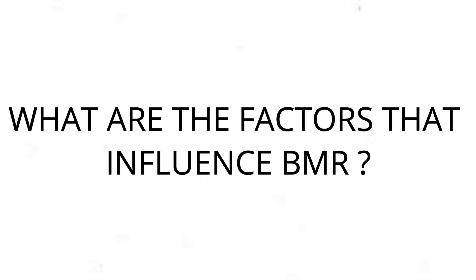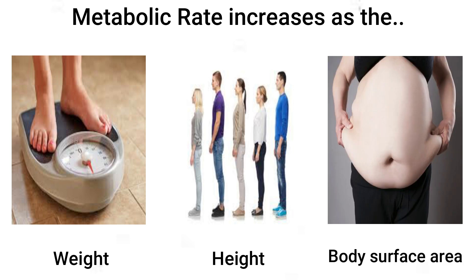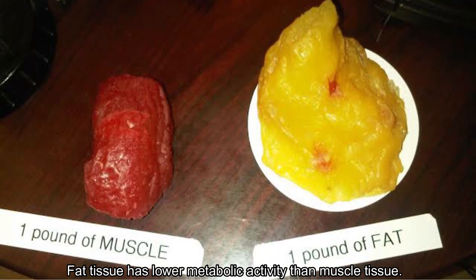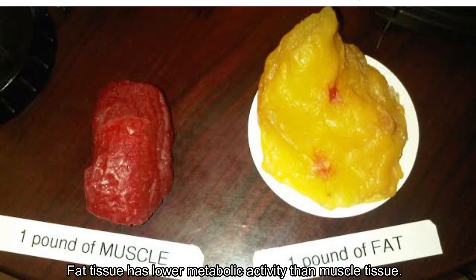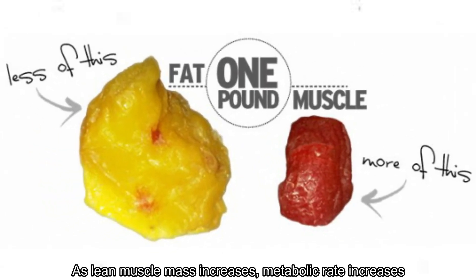What are the factors that influence BMR? The first one is body size — metabolic rate increases as the weight, height, and surface area of the body increase. Body composition: fat tissue has lower metabolic activity than muscle tissue, so as lean muscle mass increases, metabolic rate increases.